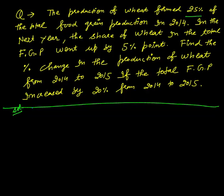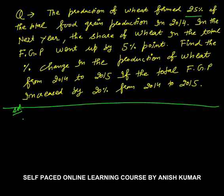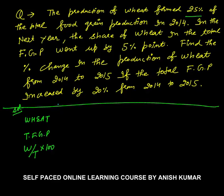Now let's discuss a question based on the concept just discussed. The question says that the production of wheat formed 25% of the total food grain production in 2014. We don't know the total food grain production. There are three variables: wheat production, total food grain production (TFGP), and wheat divided by total into 100 — the percentage of wheat production. In 2014, wheat formed 25% of total food grain production.